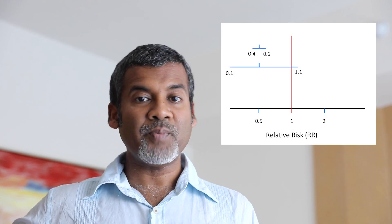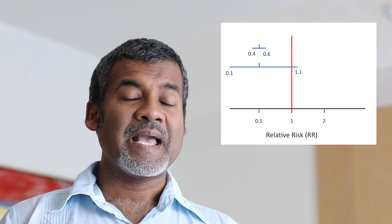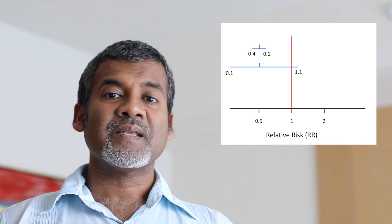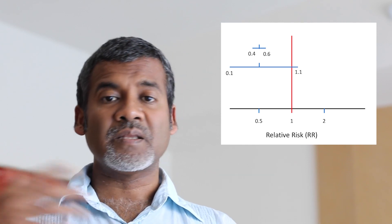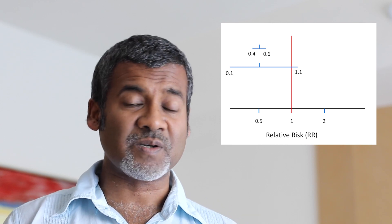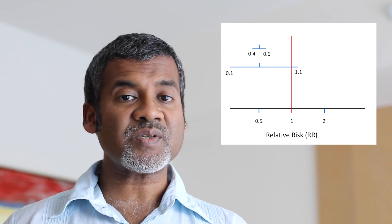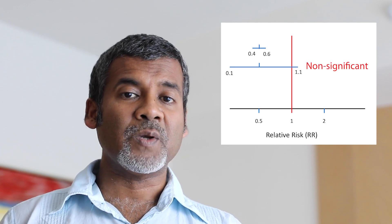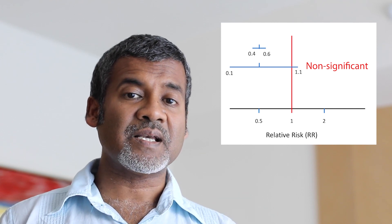But if the confidence interval goes from 0.1 crossing 0.5 all the way to 1.1, then this confidence interval is extremely wide and we are not confident about the estimate of 0.5. A relative risk of 1 means there is no benefit from the treatment — the risk in the treatment group and in the control group are the same. So if your confidence interval crosses 1, or includes 1 within it, then your confidence is extremely weak and we would say that finding is statistically not significant.